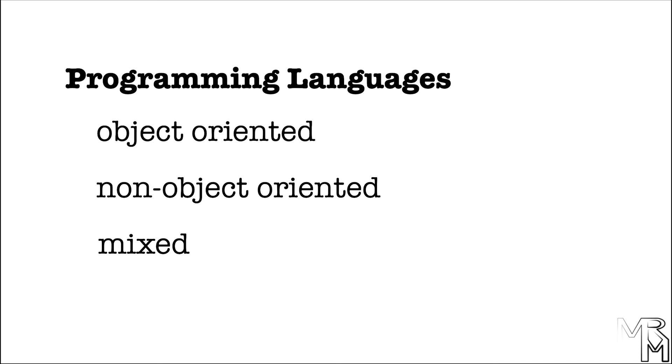For example, the C programming language that we used in one of the previous video series is non-object-oriented. And Scratch, as mentioned before, is somewhat object-oriented. In this video series we'll be using Java, an exclusively object-oriented programming language. In the next video we'll talk more about Java and why we use it in this video series. And this is it for today — see you next time! Bye!